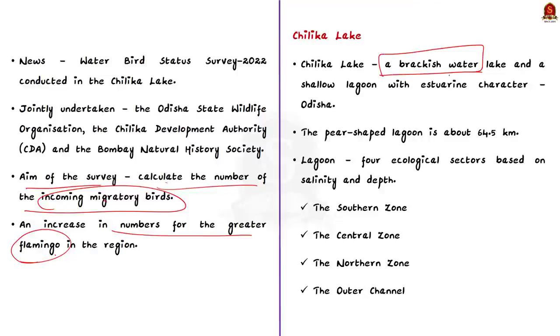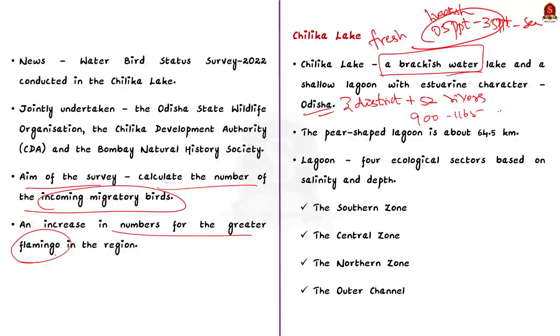See friends, Chilika Lake is a brackish water lake. Brackish water means it has a salinity of 0.5 parts per thousand to 35 parts per thousand. Over 35 ppt, it is sea water and below 0.5 ppt, it is fresh water. It is a shallow lagoon with estuary character spreads across three districts in the state of Odisha. See, it is fed by 52 rivers and rivulets. And the water spread area of Chilika varies between 900 to 1165 square kilometer during different season. That is, in summer, the watershed area will be 900 square kilometer and in monsoon, it will be 1165 square kilometer. This spear-shaped lagoon is about 64.5 kilometer long and its width varies from 5 to 18 kilometer. It is connected to the Bay of Bengal by a 32 kilometer long and 1.5 kilometer wide channel that mostly runs parallel to the Bay of Bengal.